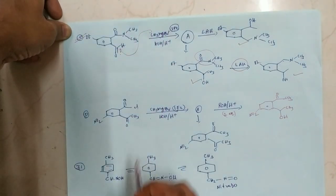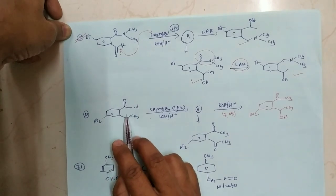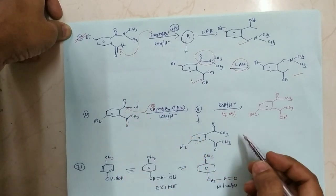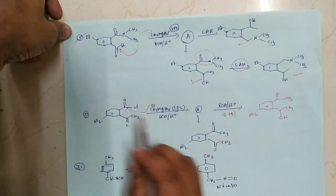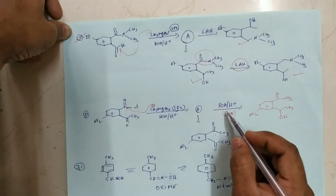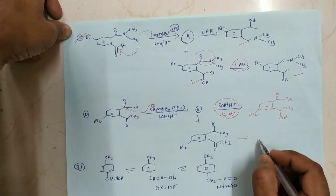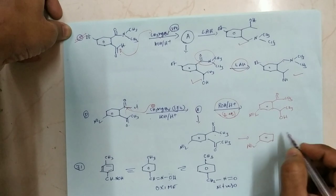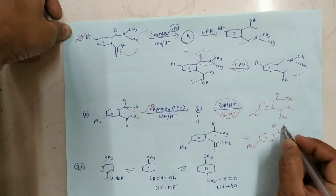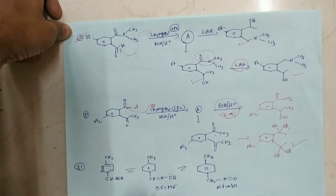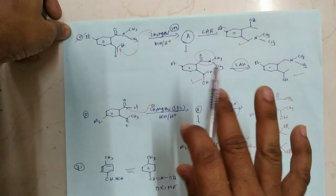Coming to option D, between acid halide and ketone, acid halide is more reactive, so it is attacked by methyl magnesium bromide and we get a diketone — the acid halide is converted into a ketone. Reacting with two equivalents of alcohol, acetals are formed. The acetal product has an –OH and –OR group attacking the keto group. The incorrect product is given in option D, confirming option C is the right answer, based on the reactivity of carbonyl compounds and acid derivatives.